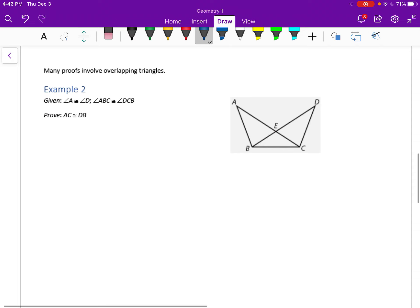The last thing we're going to look at is a proof. And sometimes, so in this proof, we have several triangles that are there, but sometimes we have to notice overlapping triangles. So in this example, it asks us, or it gives us some information, asks us to prove that segment AC is congruent to segment DB.